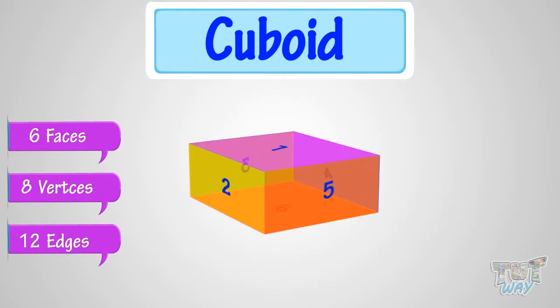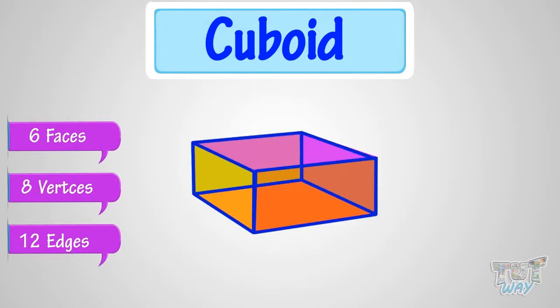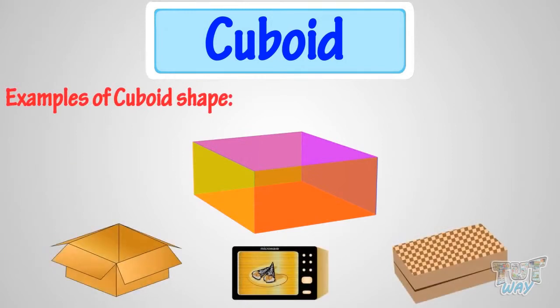But all its faces are not equal. And four faces of cuboid are necessarily rectangular in shape. These are a few things which have cuboid shape.